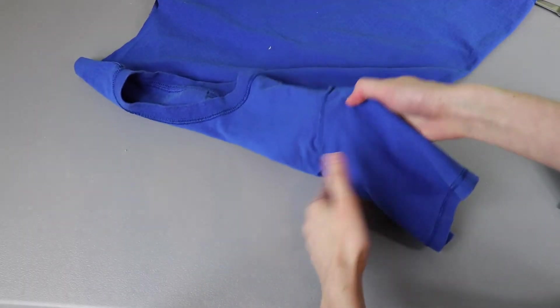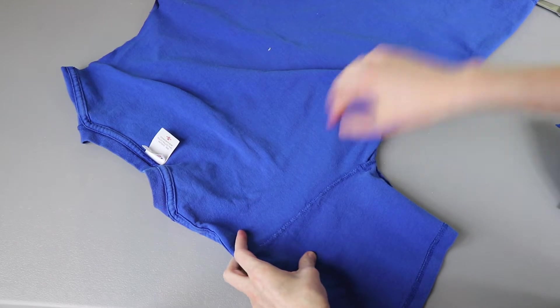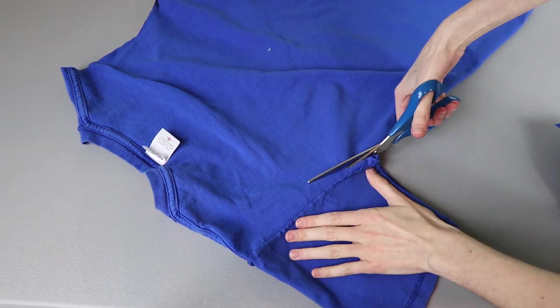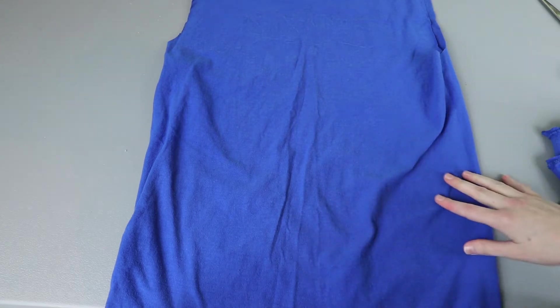And I'm just making sure that the seam of the sleeve on either side is lined up so I don't cut too much off. Once we've cut the sleeves off we're going to come to the front of our shirt and we're going to find the middle.